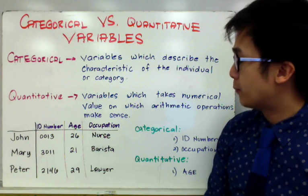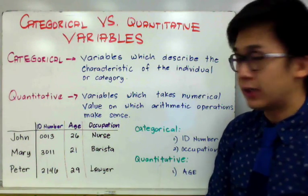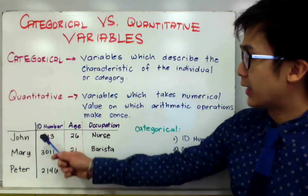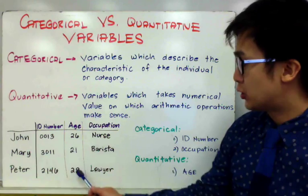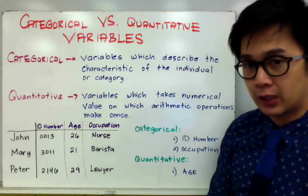In this particular example, under the categorical variable, we can consider the ID number and occupation as our categorical variable. And the age will be the quantitative variable.